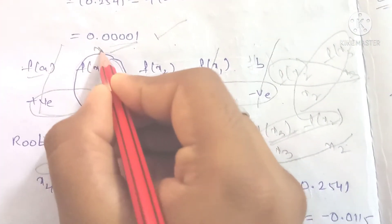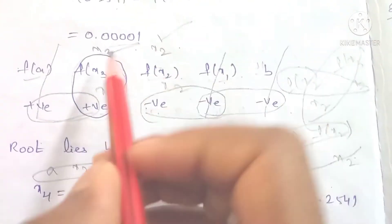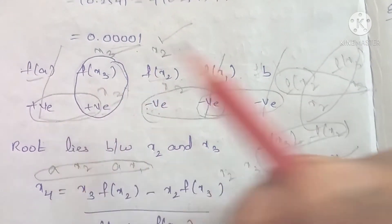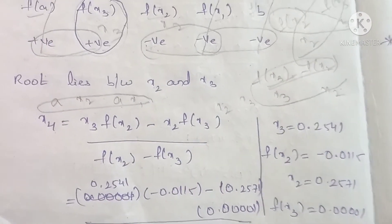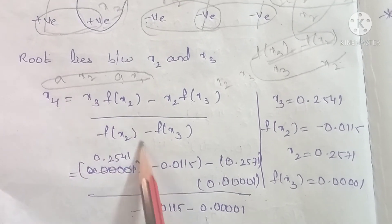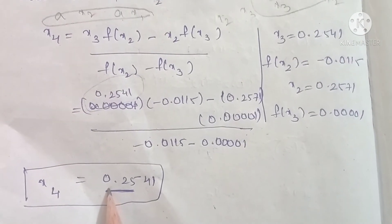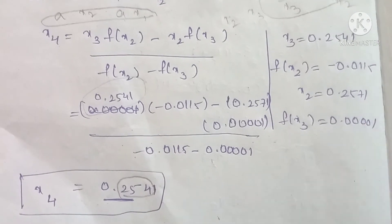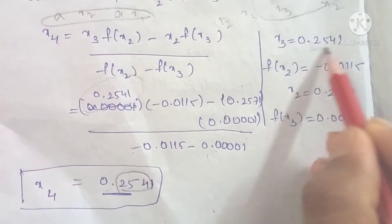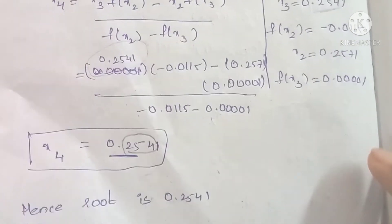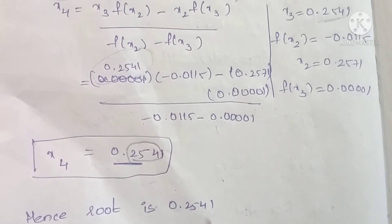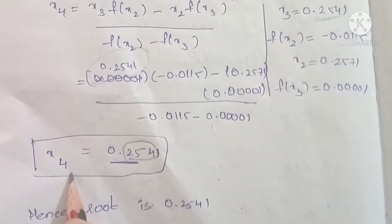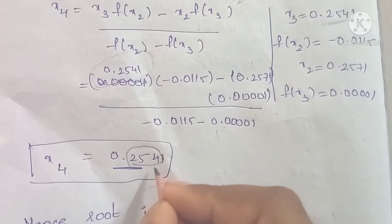Looking at x3 and x2, using the formula: x4 = (x3 × f(x2) - x2 × f(x3)) / (f(x2) - f(x3)). The x4 value is 0.2541. The last 3 digits of x3 are 254 and x4 is 0.2541, so the last 3 digits match at 0.254.